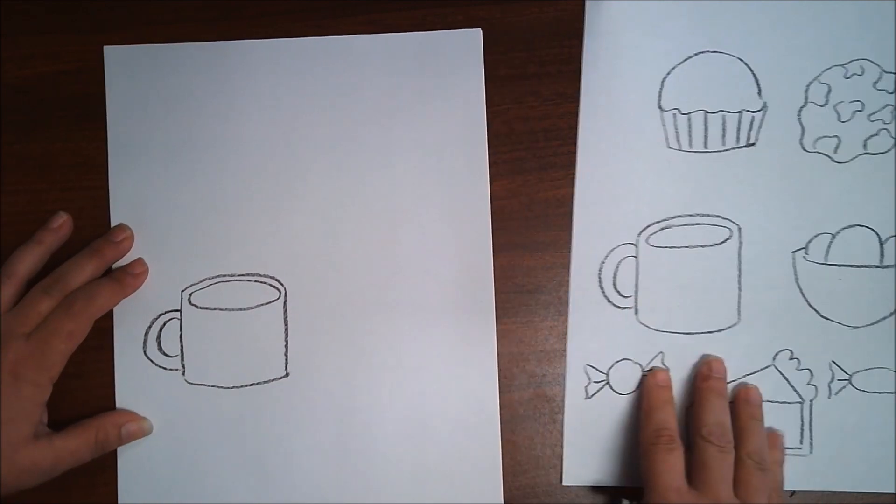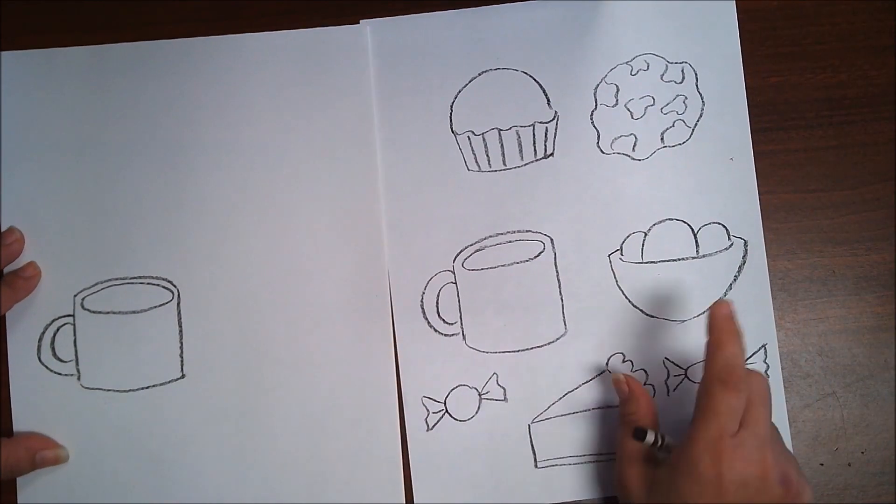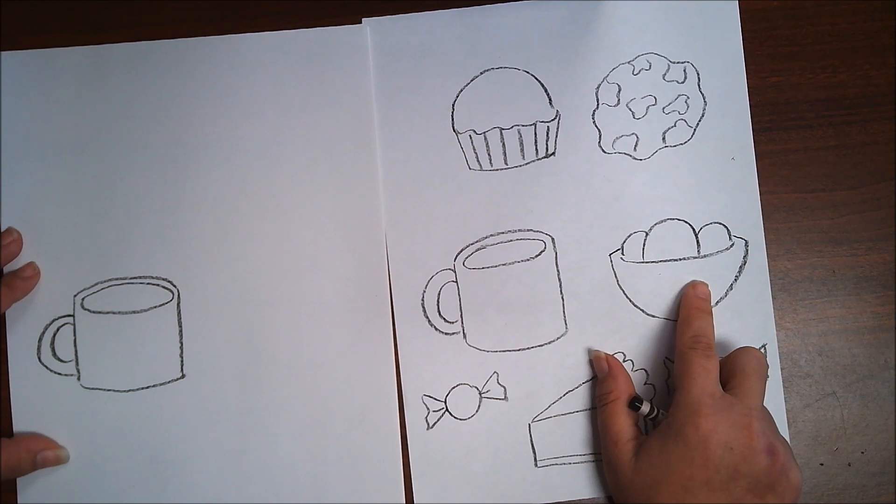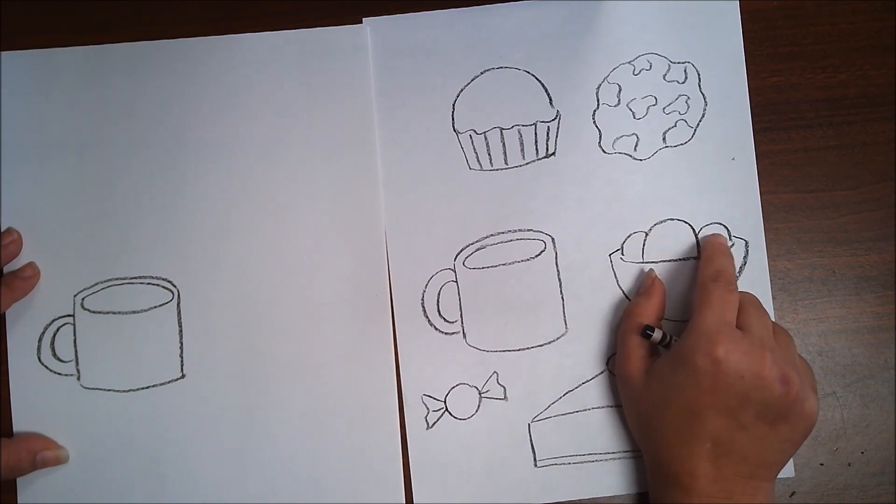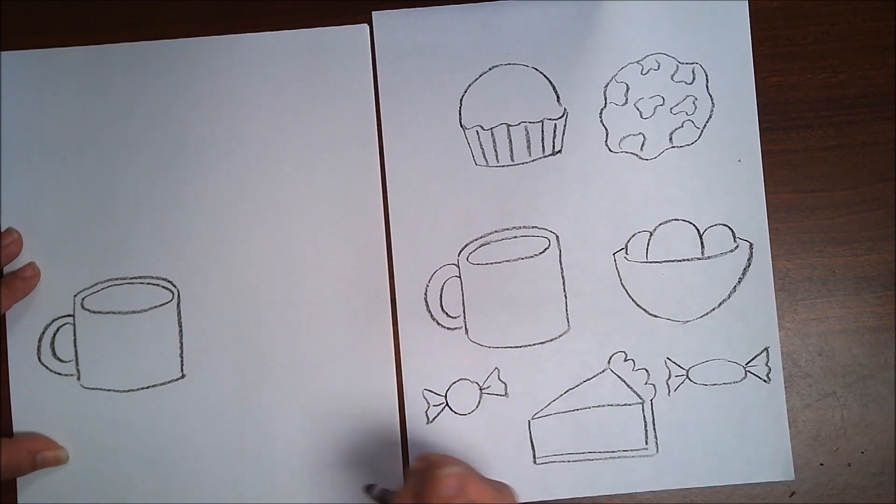And then we want to do the other hard part which is the ice cream. Now if you don't want ice cream and you say ice cream but you like pudding we can just do a curved line on the top. All right. But I'm going to go ahead and do the bowl.